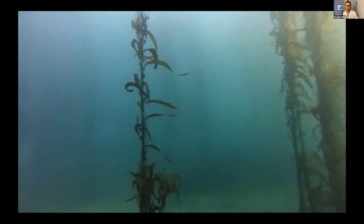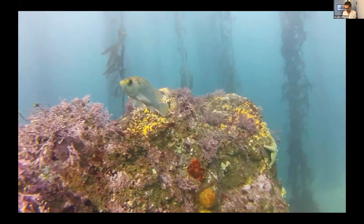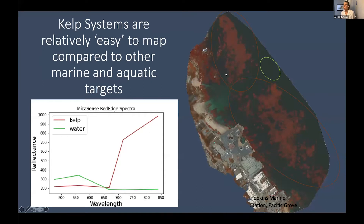But how does this relate to remote sensing? Because right now we're underwater, not above water, which is where we use UAVs. Kelp forests are actually relatively easy to map compared to other marine and aquatic targets. There are a lot of challenges associated with remote sensing of the marine and oceanographic environment that we don't necessarily encounter in kelp forest systems — that's why we say they're relatively easy to map.